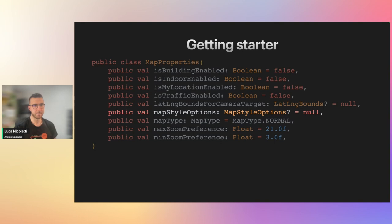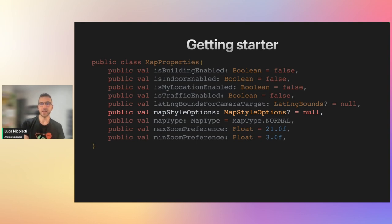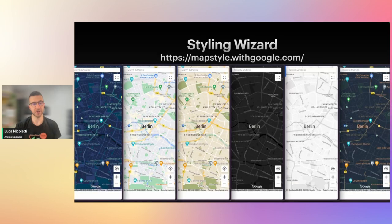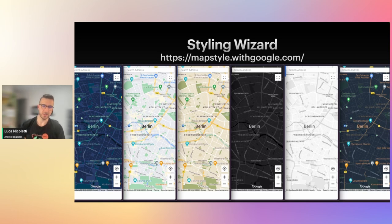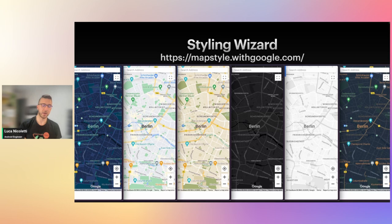There is also the map style option that lets you specify a style for your map. There is a styling wizard reachable at the link shown on screen. The wizard provides six preset styles shown on screen, and you can then customize each one as you wish. This is the deprecated way of styling your map — more on that later.